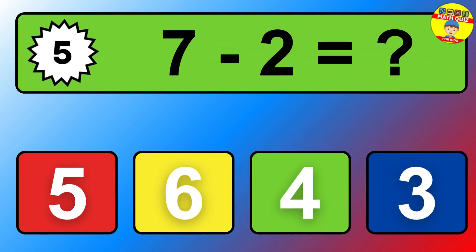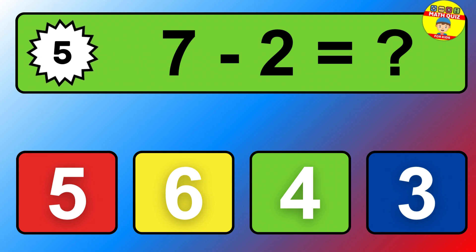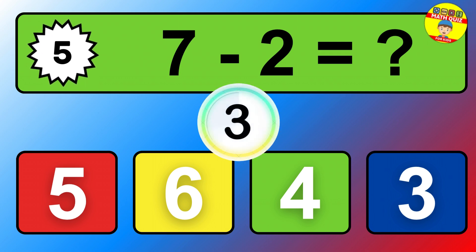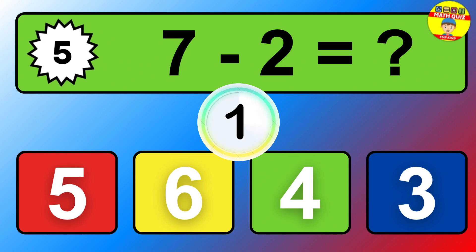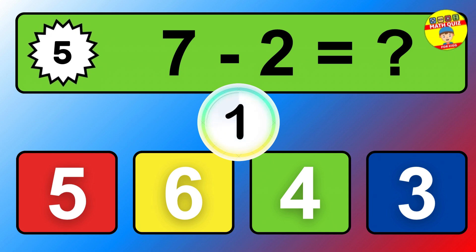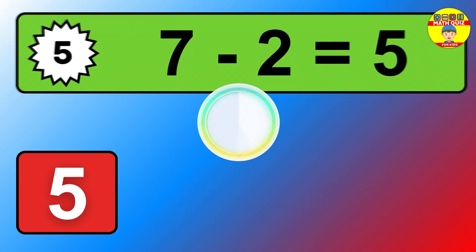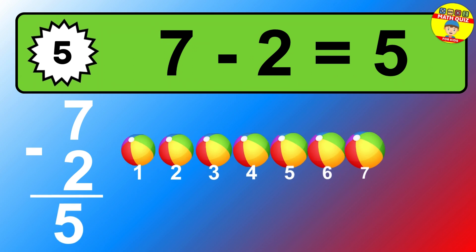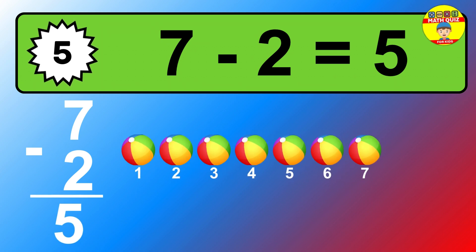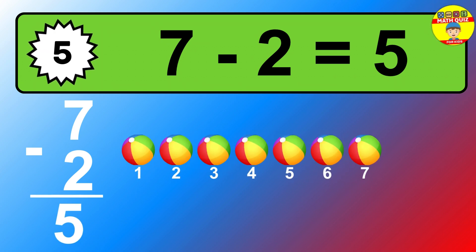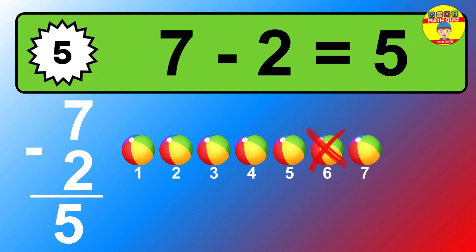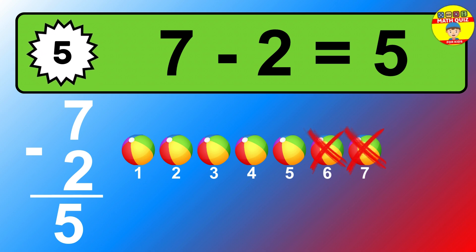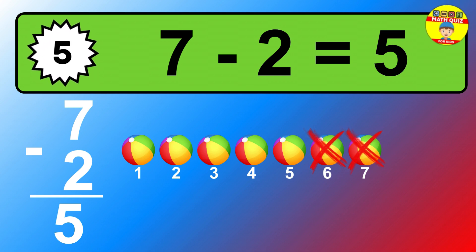Question five: seven minus two equals what? So the answer is seven minus two is five. Let's count it. One, two, three, four, five.